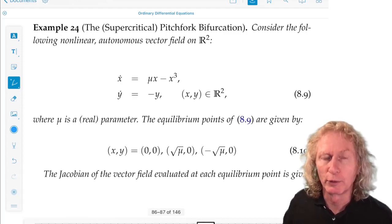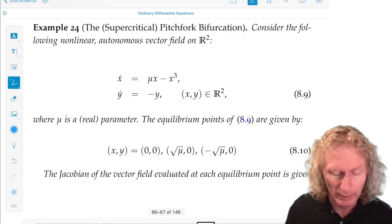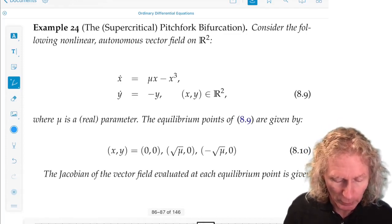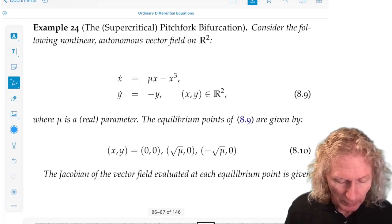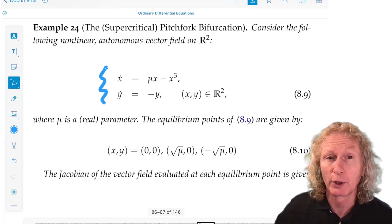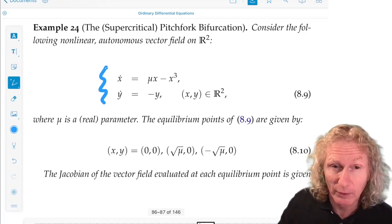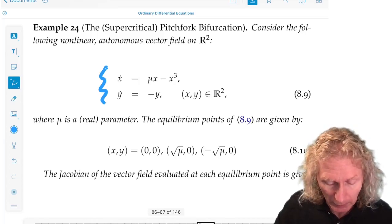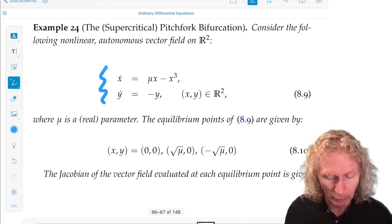So the supercritical pitchfork bifurcation, and I'll explain what that word supercritical means shortly, we consider this model equation: x dot is μx minus x cubed, so we see that x equals 0 is always in equilibrium in this case, and y dot equals minus y.